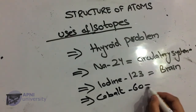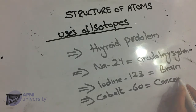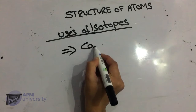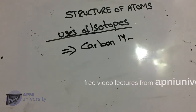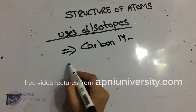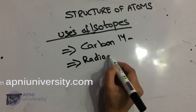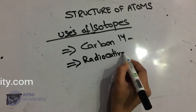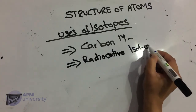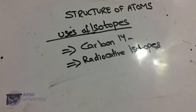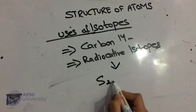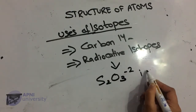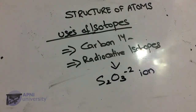Cobalt-60 is commonly used to irradiate cancer cells in the hope of killing or shrinking tumors. Carbon-14 is used to trace the path of carbon in photosynthesis — to trace different carbon pathways in the photosynthesis process.